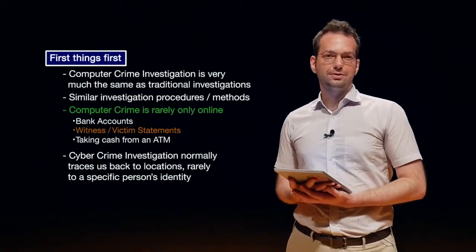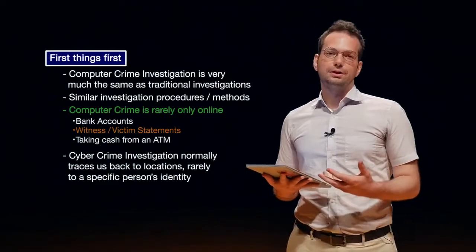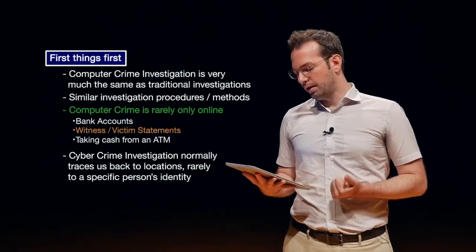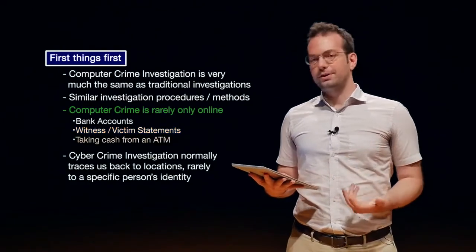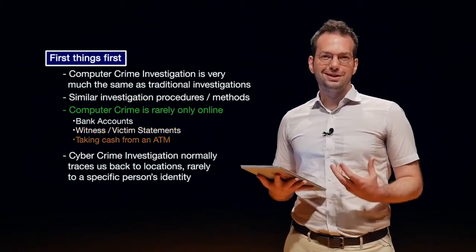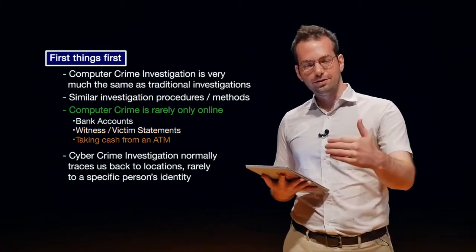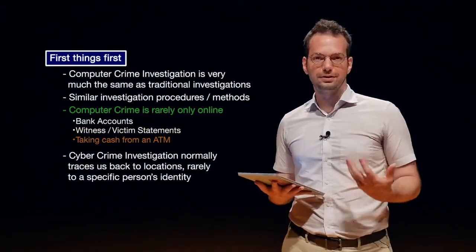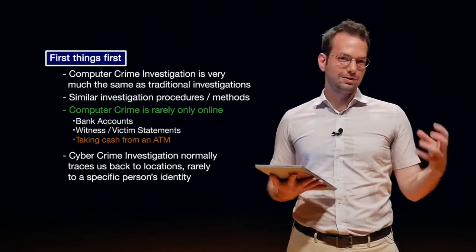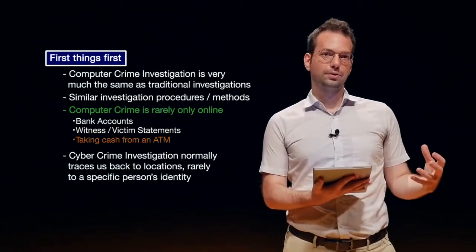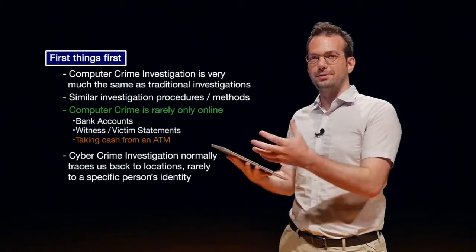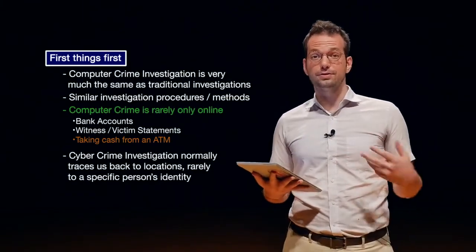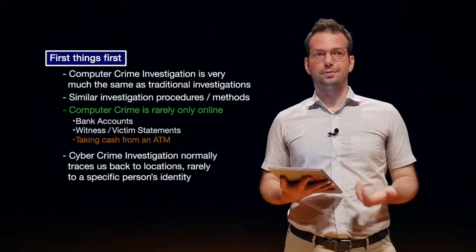Without witnesses and victims it's very difficult to even start a case, unless we're doing some sort of operation. Taking cash from an ATM is one of the most obvious ways criminals go from an online crime to an offline crime. There has to be some connection to criminals in the physical world — these people doing the crime versus the crime they've committed online, potentially all over the world — and we're looking for what that connection is to find out who they are and how they work.